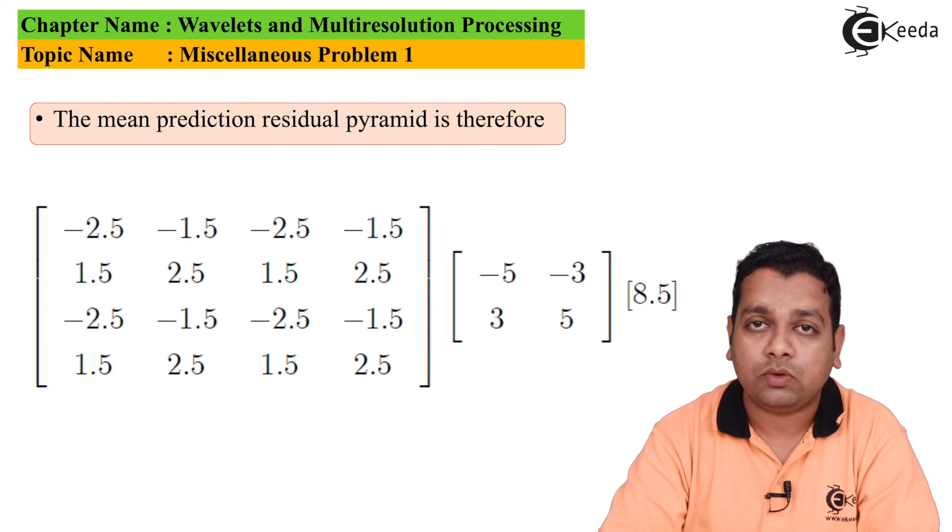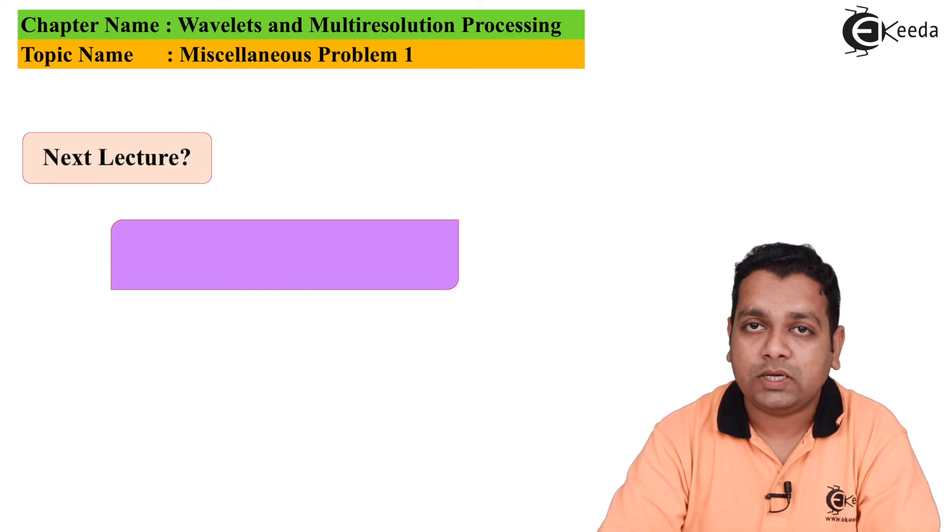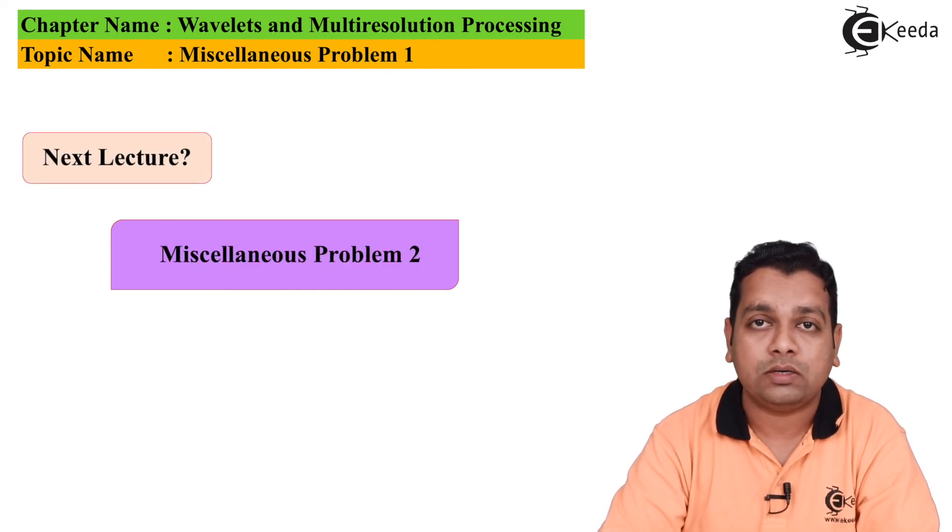The last row has 1.5, 2.5, 1.5, 2.5. The intermediate level in the pyramid has -5, -3, 3, 5, and the apex given by 8.5. This completes the answer to miscellaneous problem number one based on the understandings of image pyramid, the initial approach to have multi-resolution analysis.